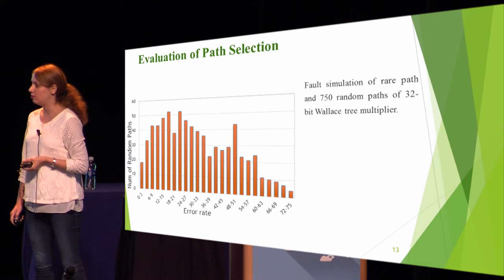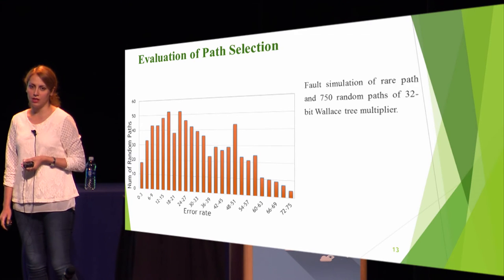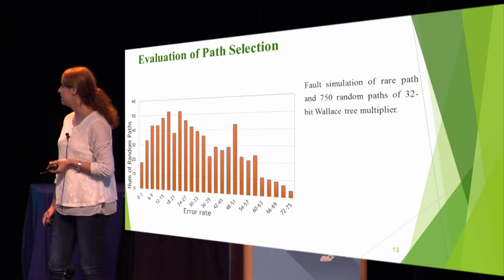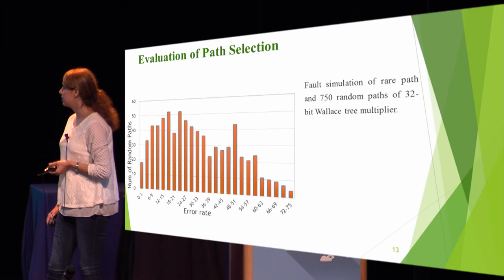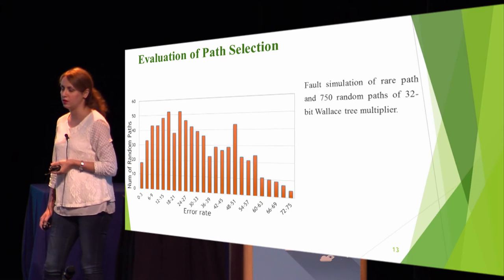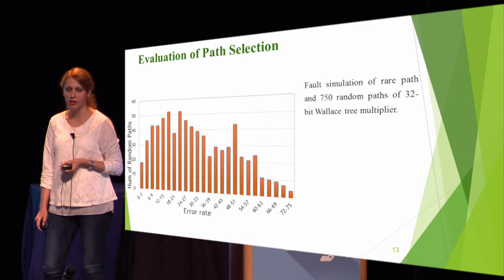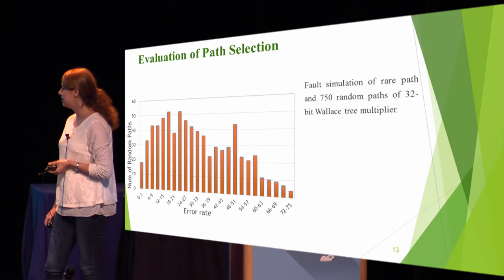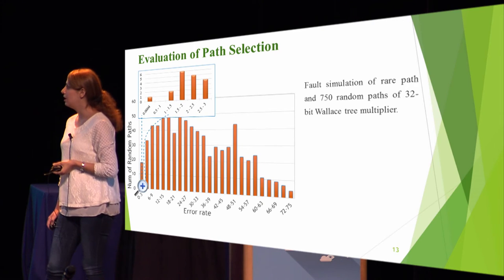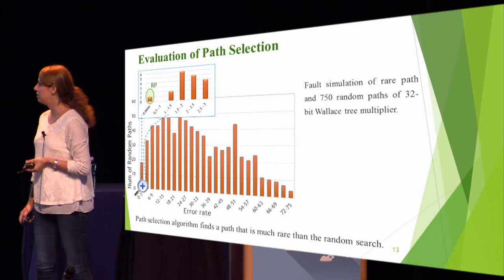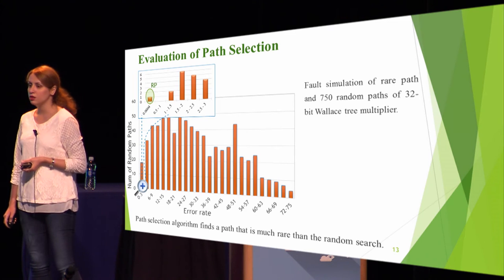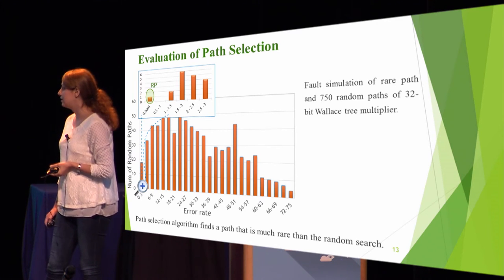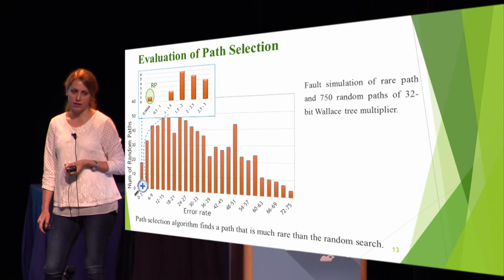To evaluate our path selection algorithm, we compare the stealthiness of our selected rare path with 750 random paths of a 32-bit Wallace multiplier. The figure reports the error rate of all these paths. When we zoom in, we can see the error rate of our selected rare path, showing that our path selection algorithm finds a path that is much rarer than random search.